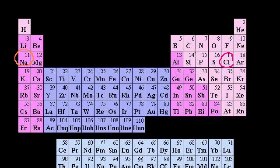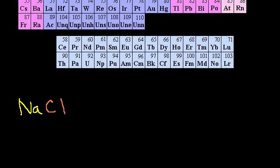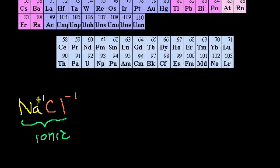We've talked about this story multiple times early in the chemistry playlist. Sodium, since it wants to lose an electron, is going to give it to chlorine, and chlorine's going to gain it. So sodium will have a plus one charge because it lost an electron, and chlorine will have a minus one charge because it gained one. They'll be attracted to each other — the Coulomb force will make them want to be together — and we call this an ionic bond. In an ionic bond, you literally have a loss of an electron from one compound to another.